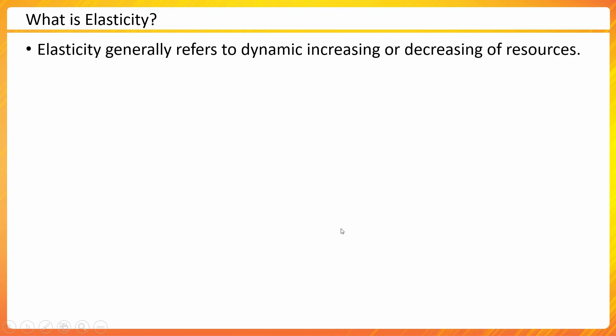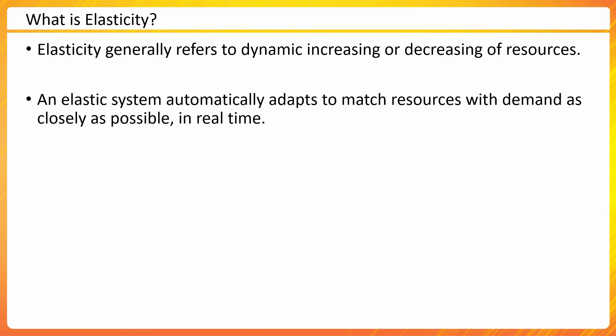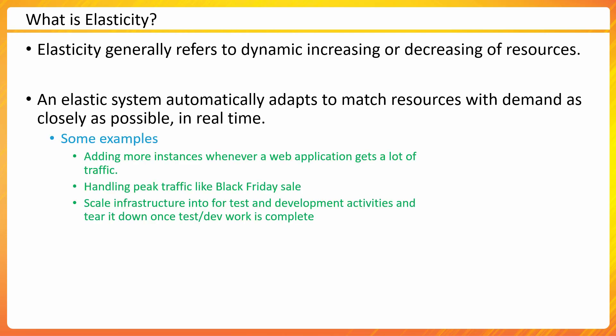Elasticity refers to the dynamic increase or decrease of resources. The dynamic nature is a very important consideration when talking about elasticity. An elastic system will automatically adapt to match resources with demand — resources increase when demand increases and decrease when demand decreases, mostly happening in real time. CloudFront delivered FIFA World Cup content to millions of users and scaled back down when there were only a few users.